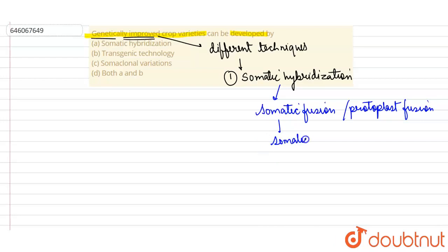So somatic hybrid can be produced. This is one of the techniques, so we know that option A is absolutely correct. The second is transgenic technology, which can be used to produce this genetically modified crop variety.